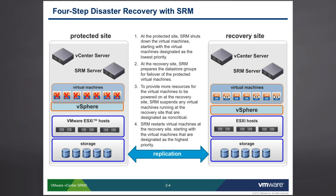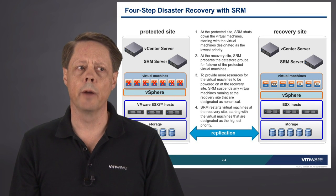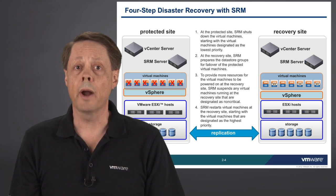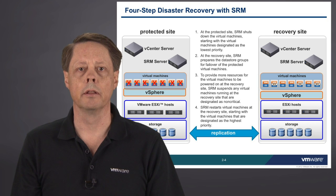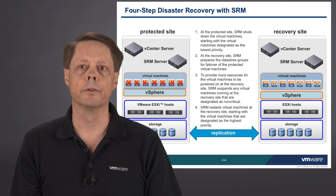The four-step disaster recovery process with SRM 5 is based around these simple elements. First, at the protected site, when SRM is installed and configured properly, the first step is to shut down virtual machines, starting with those designated as the lowest priority. Some folks ask why — if there's been a disaster, aren't they already shut down? The answer is perhaps. We can't take that risk because of the way virtual machines write to disk and the ongoing replication in the background. SRM will try to shut them off, and if the shutdown fails, it's no problem.